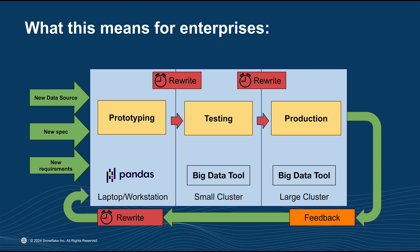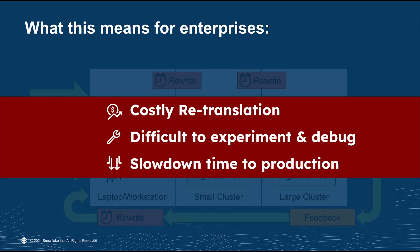And the story doesn't end there. Iteration is key to working with data. Even after you've rewritten your workload into a more scalable framework, things will break — bugs get introduced, models need to be tweaked. That rewrite process is not a one-time cost but a constant overhead that makes it difficult to maintain and debug your workflows in an agile way, leading to long development and feedback cycles. All these points of friction add up significantly in human time and development costs.